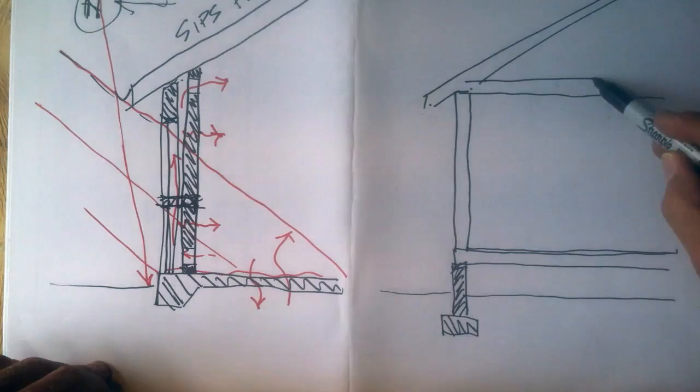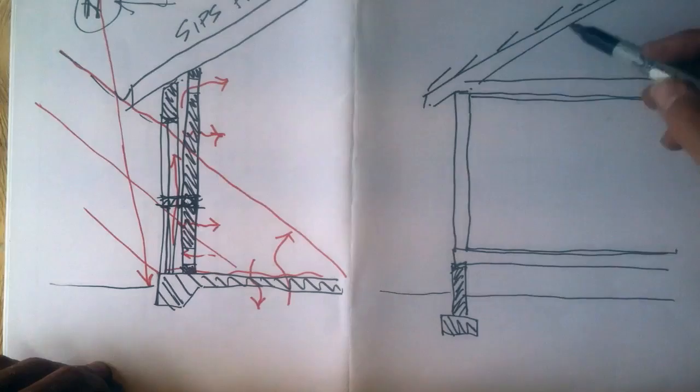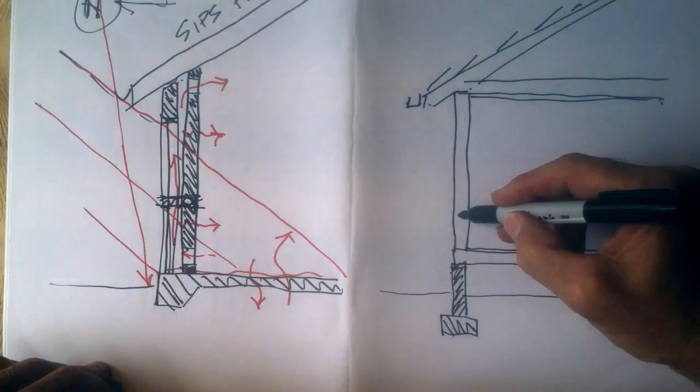Including the ceiling joists, and then this is the ceiling, and then the tile roof sits on top of that. So let's put a window in here.